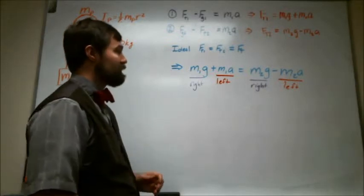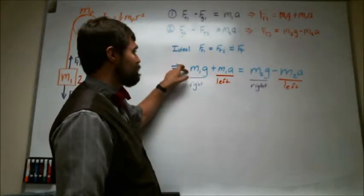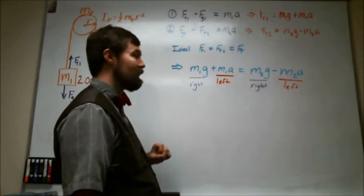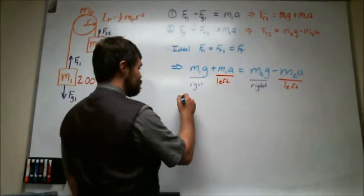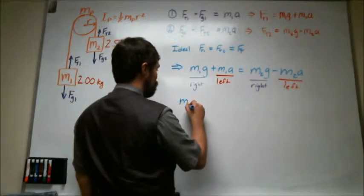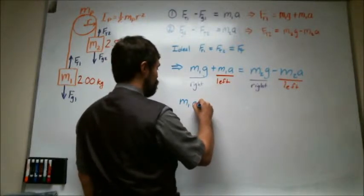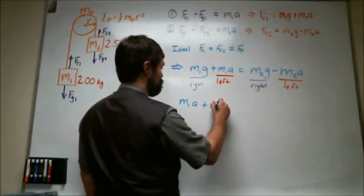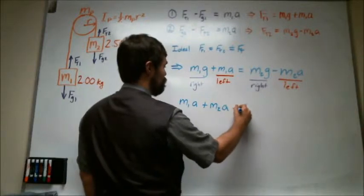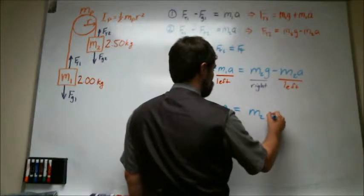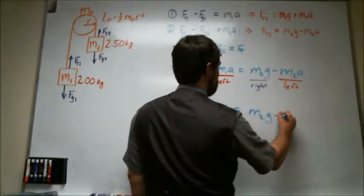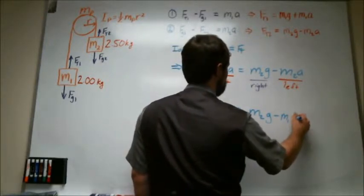So basically what that looks like is subtract this term from both sides and add this term to both sides. And so what you end up with is m1a plus m2a is equal to m2g minus m1g.